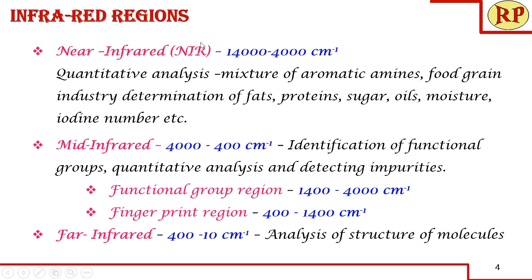The infrared region is divided into three portions. Near-infrared corresponds to 14,000 to 4,000 cm⁻¹ and is mainly used for quantitative analysis; it is useful for food industries. Mid-infrared region, 4,000 to 400 cm⁻¹, is mainly used for identification of functional groups, quantitative analysis, and detecting impurities.